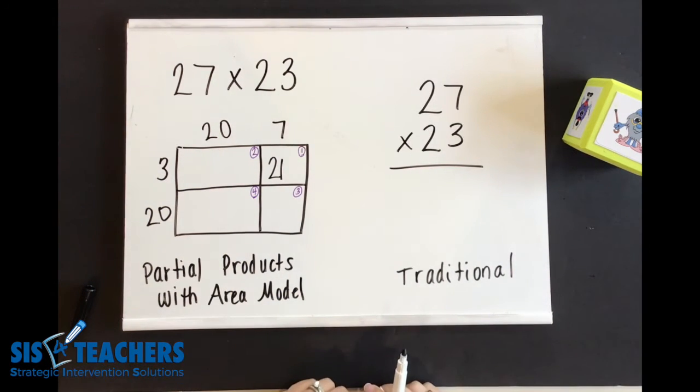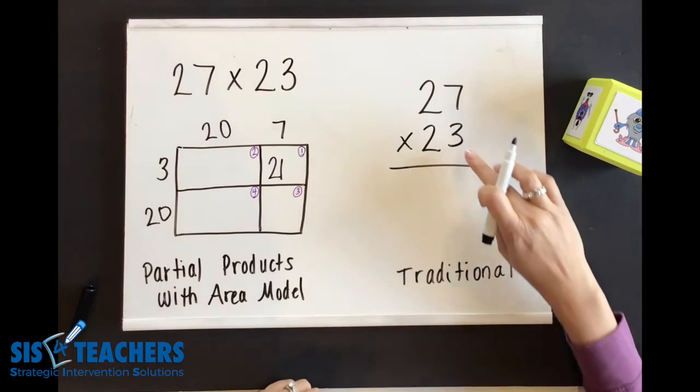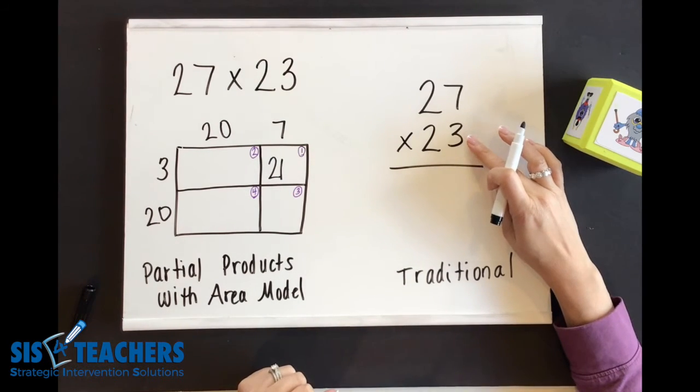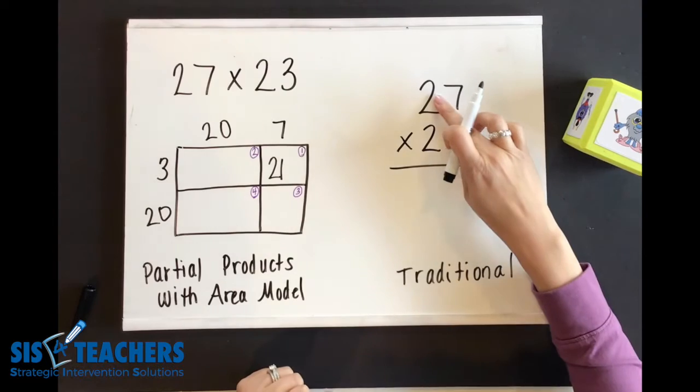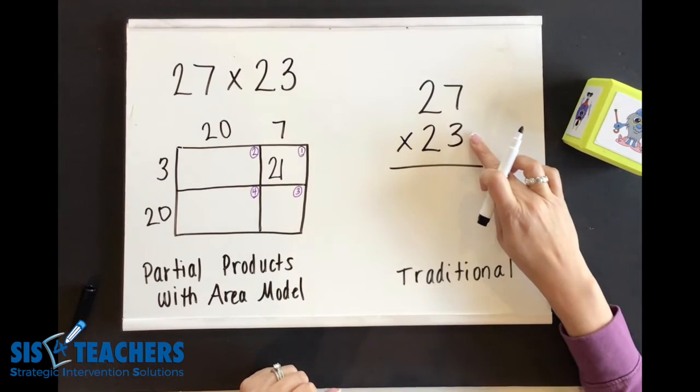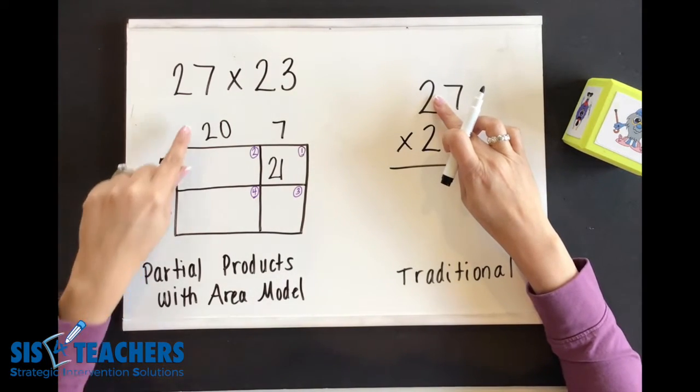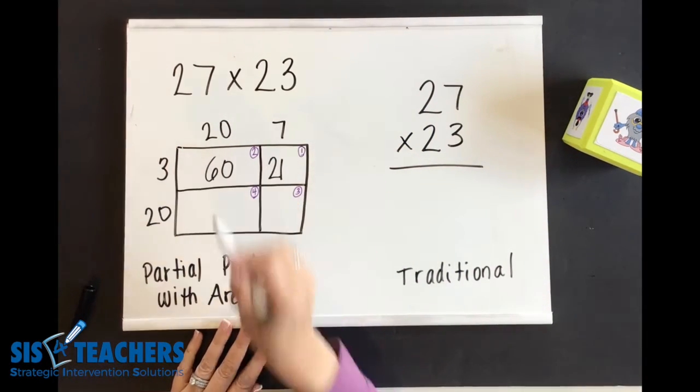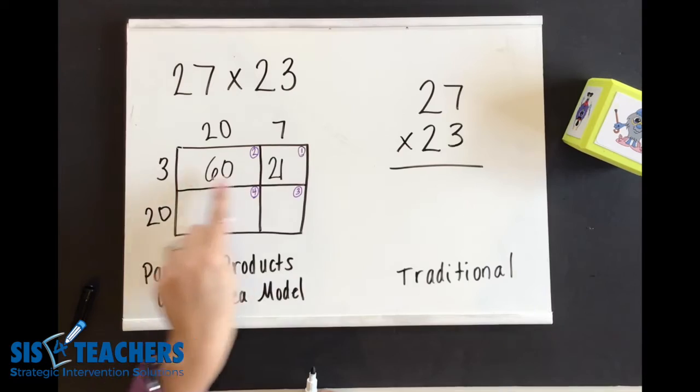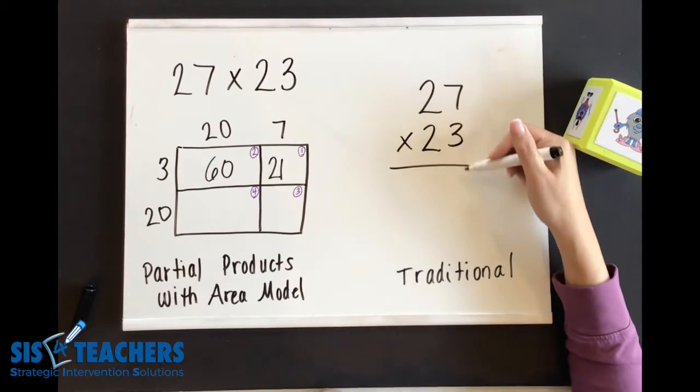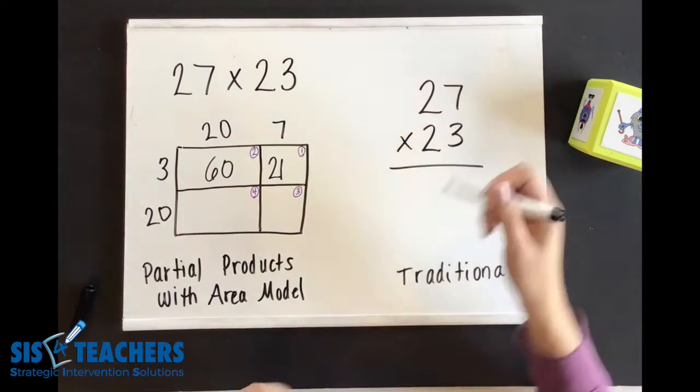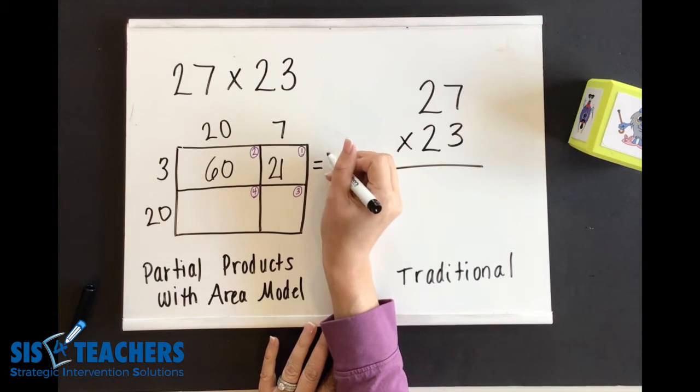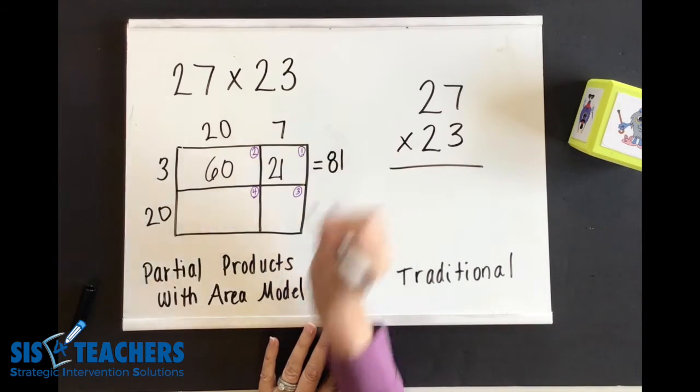So I'm going to put that 21 in here. I'm going to continue looking at what I would look at in the traditional. You and I might say 3 times 2. But is that really a 2? No. It's 3 times 20. And 3 times 20 we know equals 60. Okay. So I have this connection here. Let's go ahead and solve it now in the traditional algorithm just to make the connection. I know that 60 plus 21 is going to give me 81.